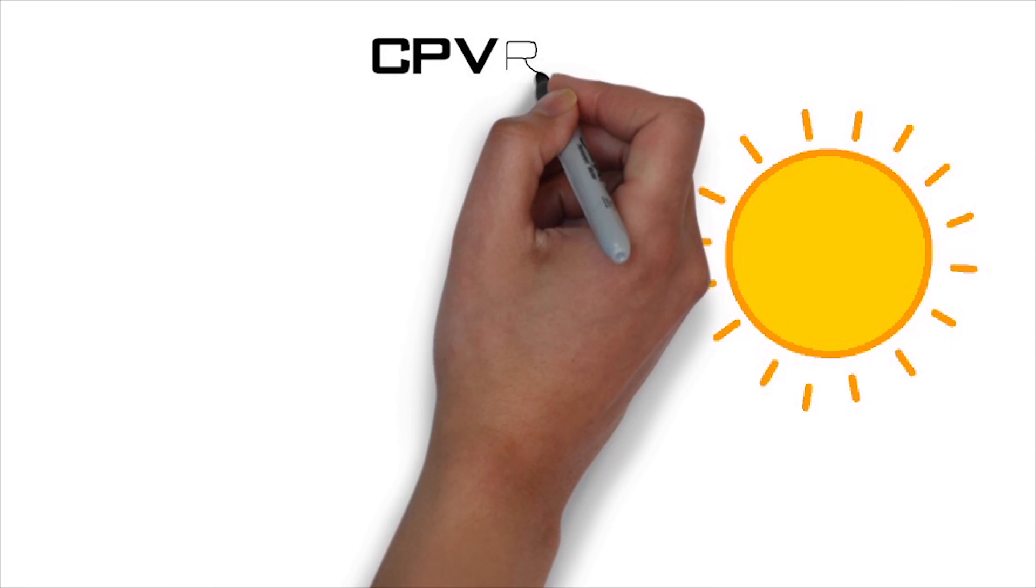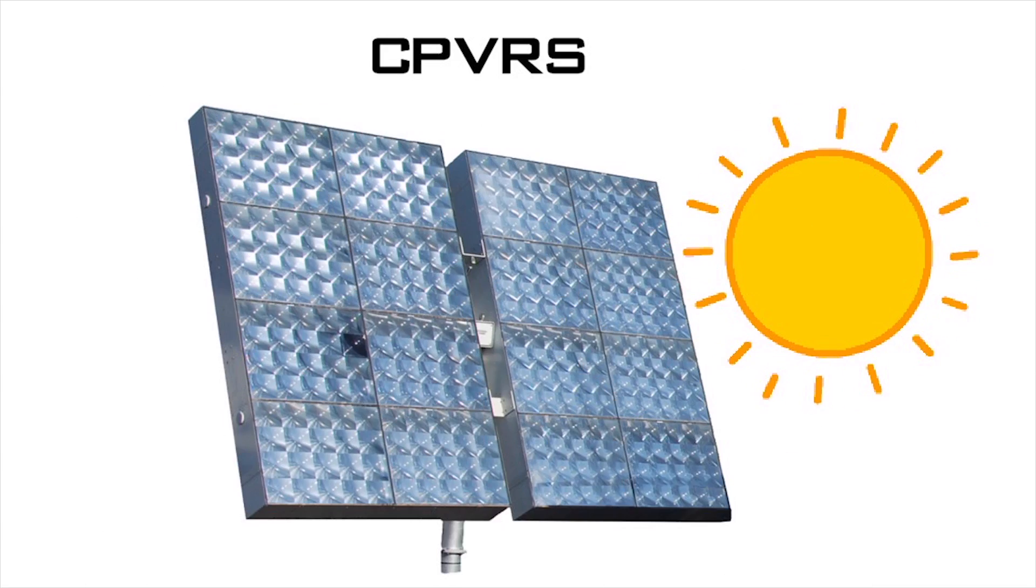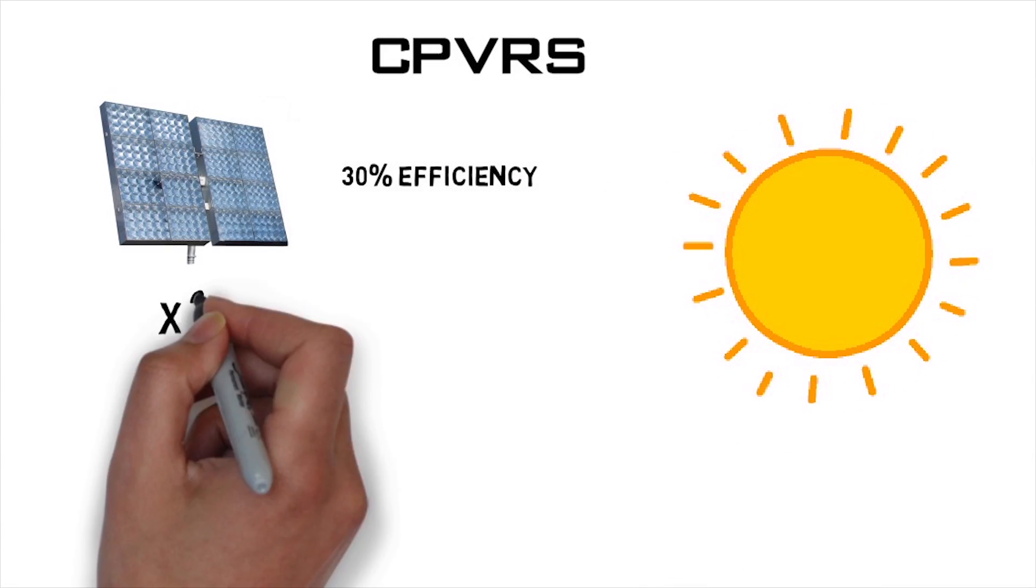Specialized in solar energy, Wilder Edge Green Power has created CPVRS, a photovoltaic concentration system that reaches 30% efficiency, doubling that of traditional systems.